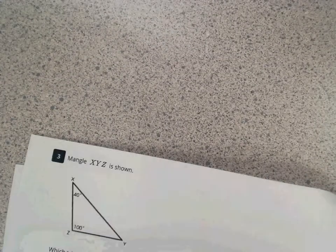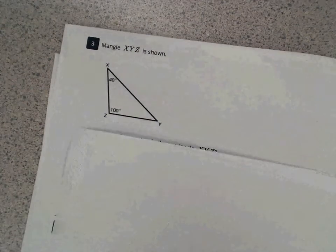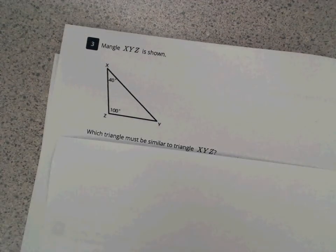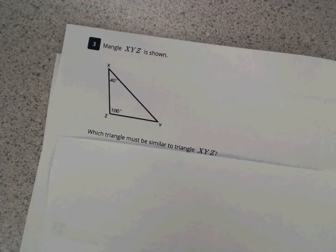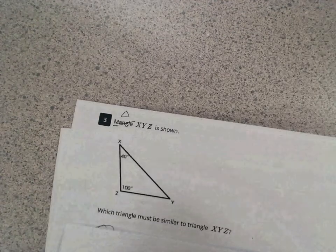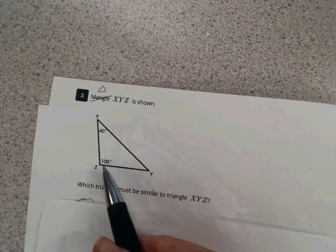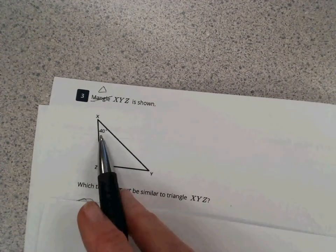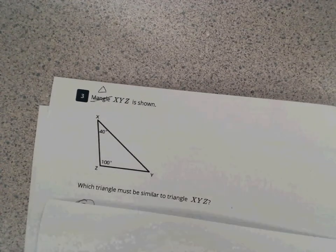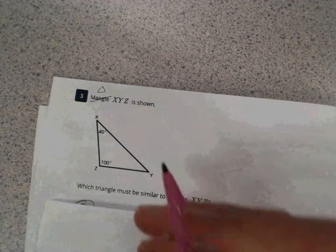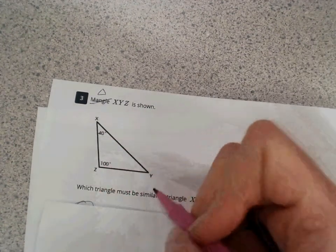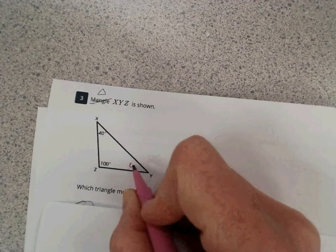Question 3. So this requires some knowledge of our properties of similar triangles. Triangle XYZ is shown. There's 100-degree, a 40-degree. Now, properties of triangles, we know that the three angles add up to 180, so that means this missing angle would also be 40 degrees.